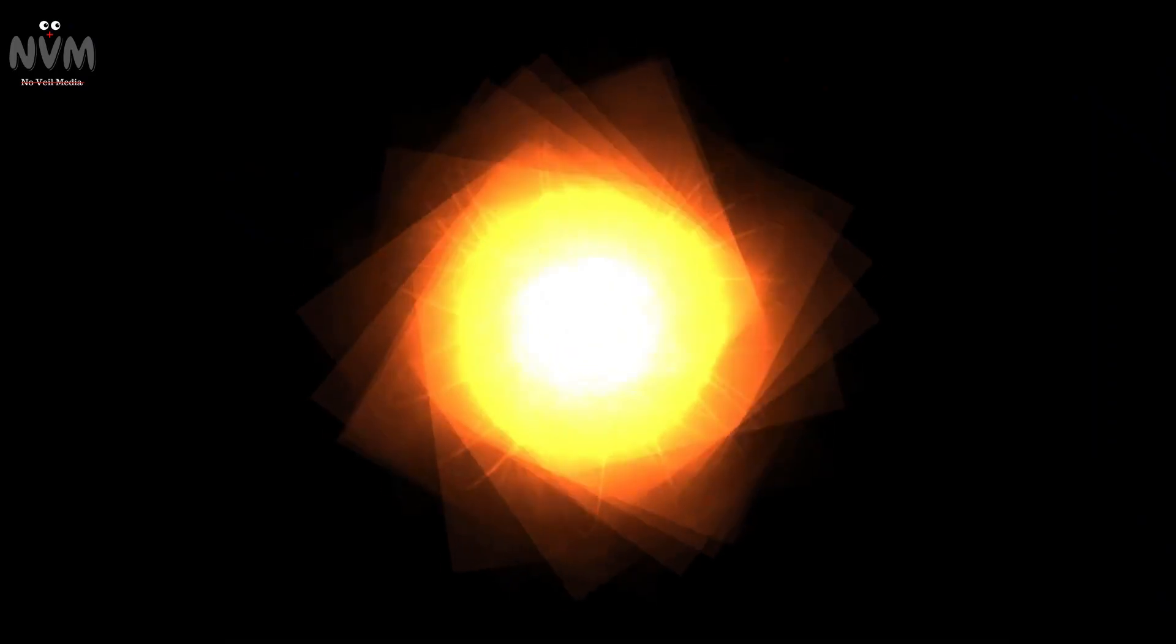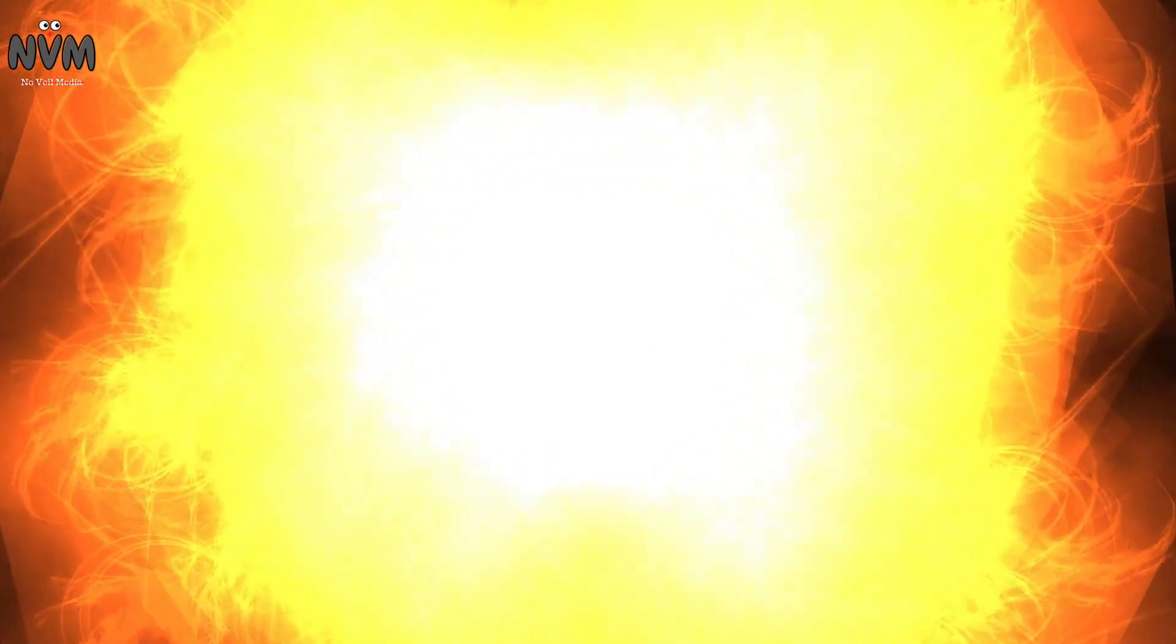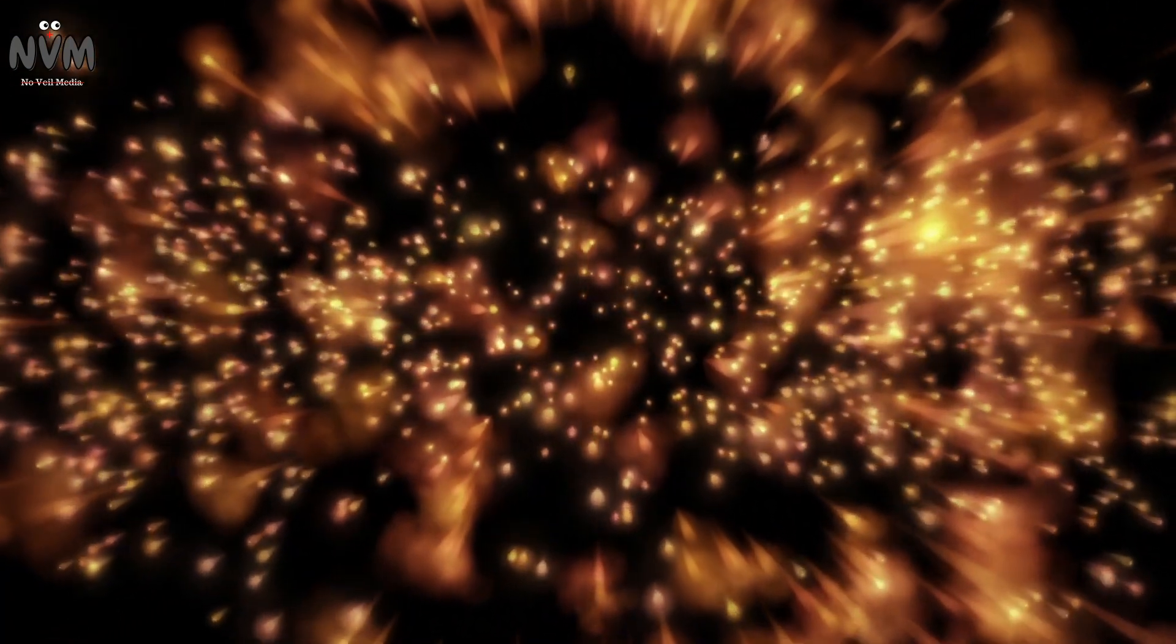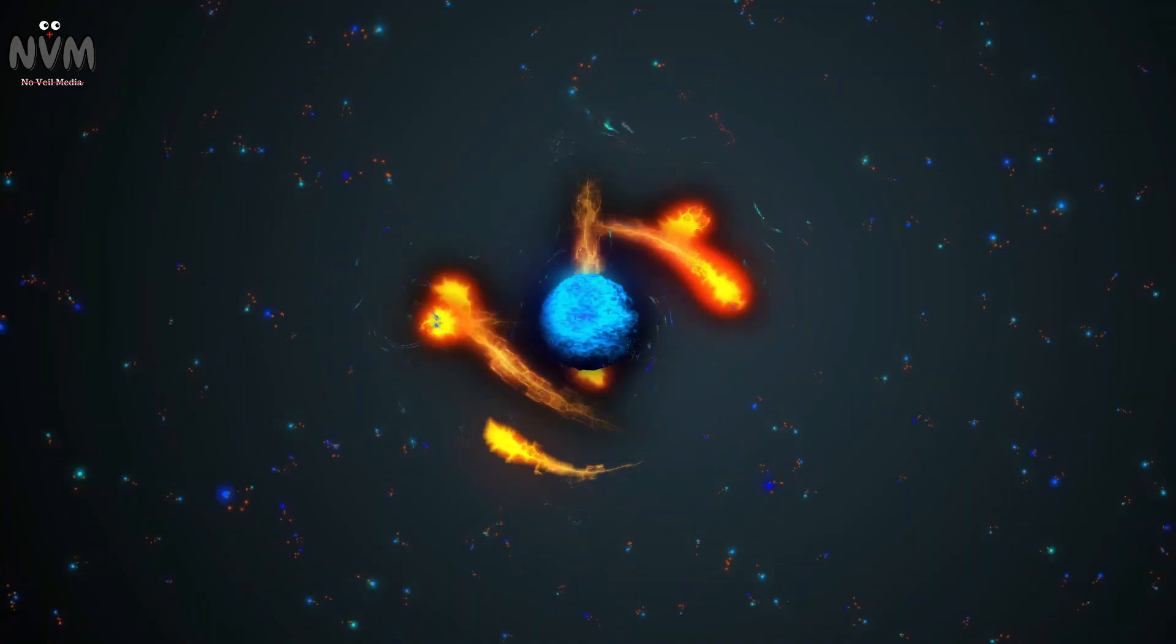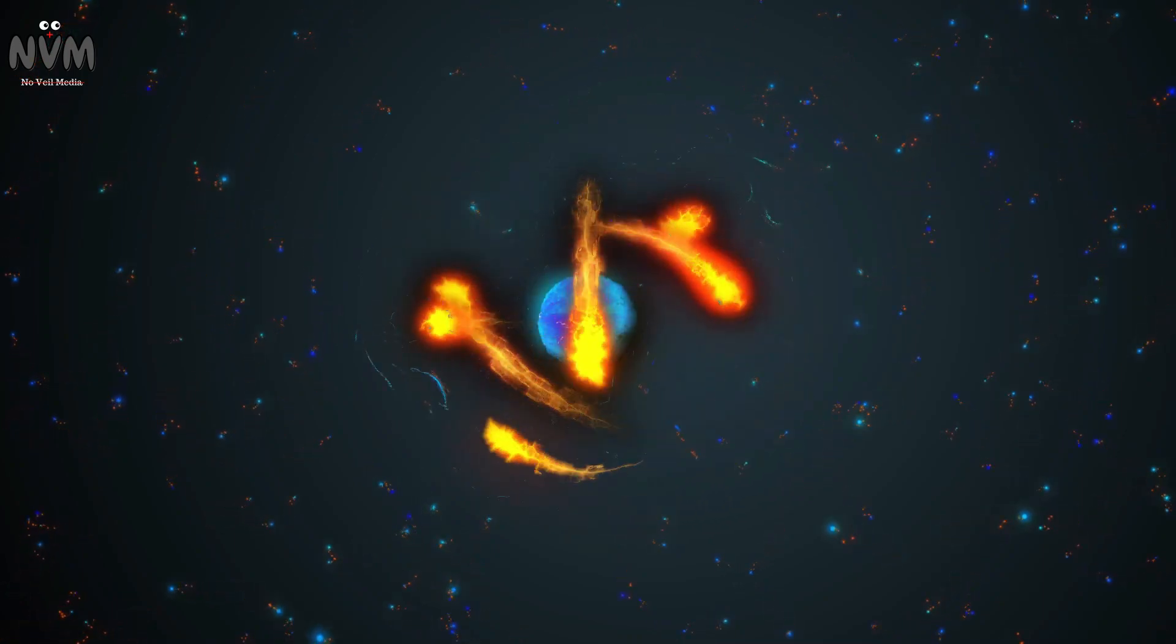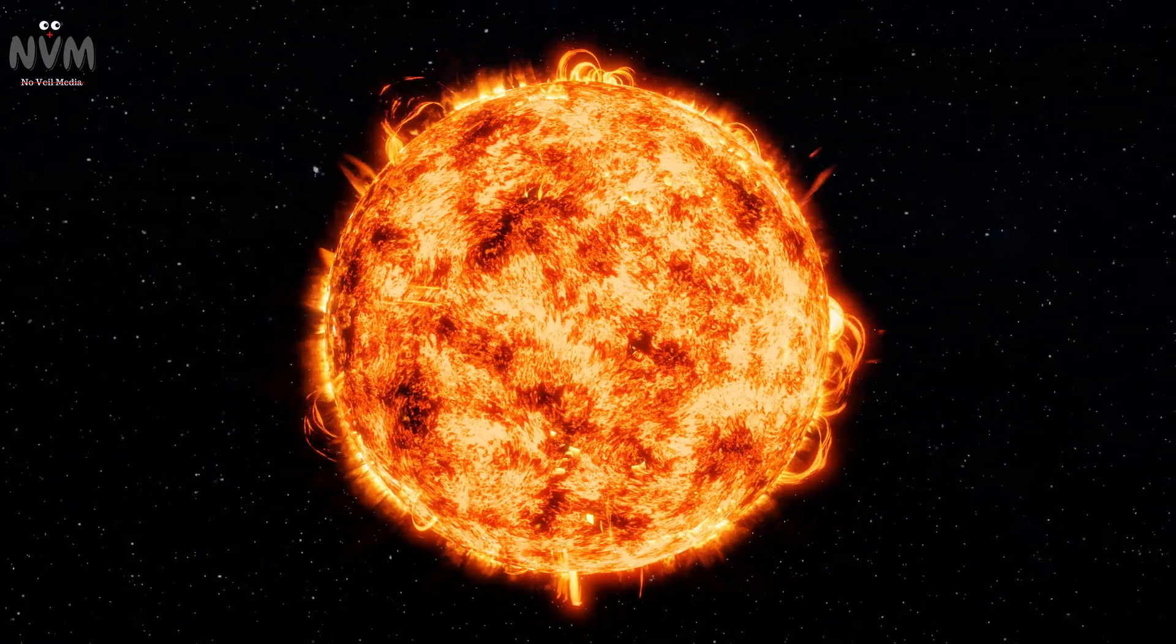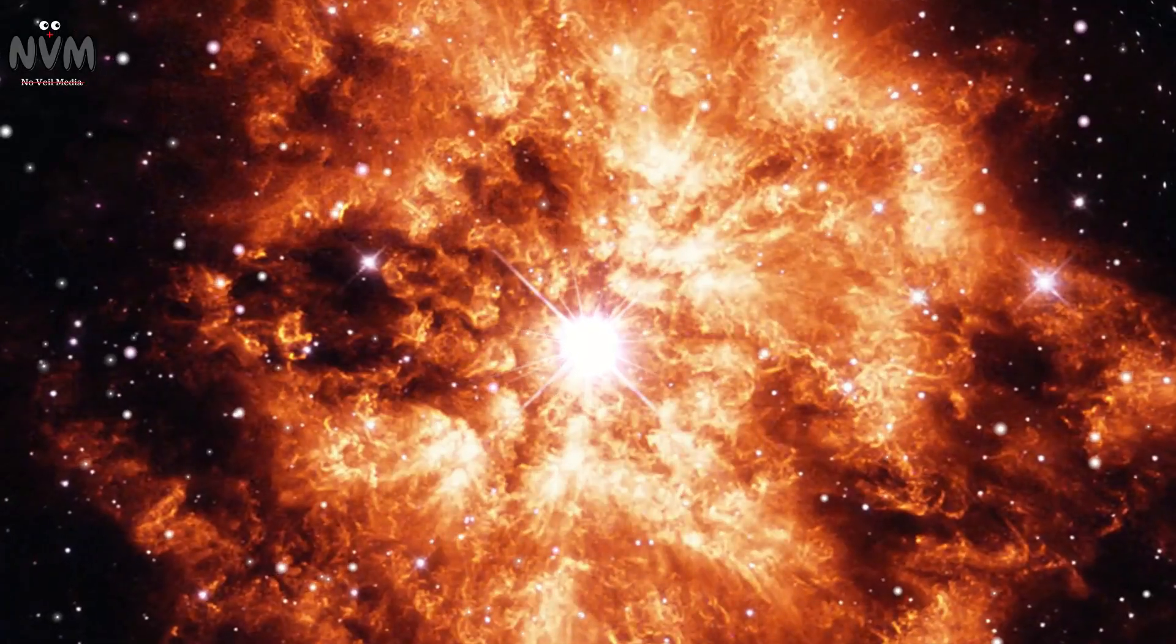In short, supernovae are colossal implosions that occur at the end of a star's life cycle, when stars with masses exceeding about eight times the mass of our sun exhaust their nuclear fuel. Stellar nuclear synthesis cannot continue providing the stabilizing outward forces needed to withstand their own gravitational pressure. This results in a collapse so powerful it produces a brilliant display of light and energy visible across the universe.